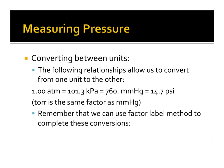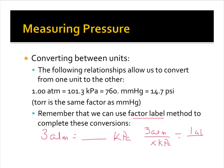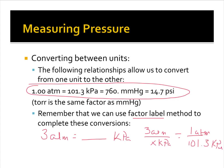Converting between units, we are going to use the factor label method, but we can still use our proportions. If you were given the example of 3 atm equals how many kilopascals, you would set it up as 3 atm over x kilopascals equals 1 atm over 101.3 kilopascals. It's the same kind of conversion problem — instead of 12 inches and 1 foot, or 60 seconds and a minute, we are now looking at this set of conversion factors.